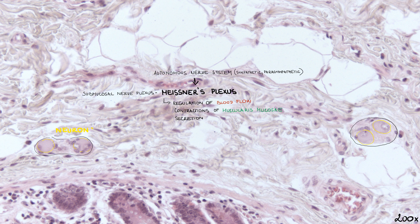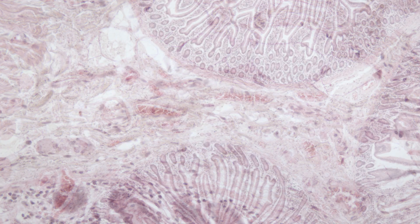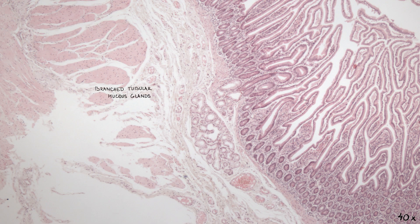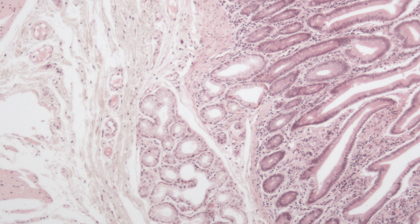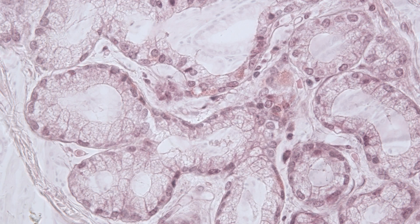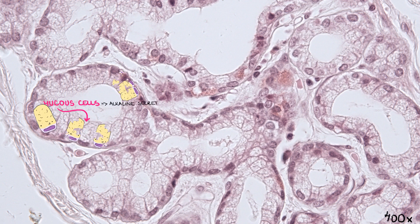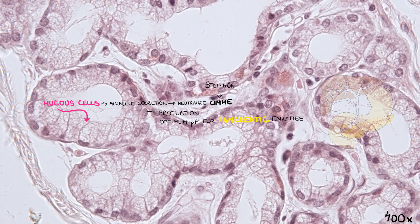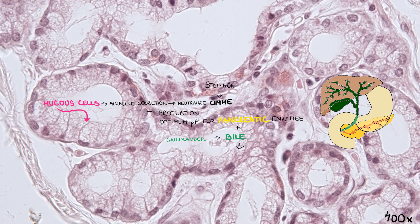We can see some neurons here, and also a plasma cell. The presence of branched tubular mucous glands — the duodenal or Brunner's glands — is what distinguishes the duodenum from other parts of the small intestine. These glands extend from the submucosa into the mucosa. Cells lining their epithelium are mucous cells which produce a distinctly alkaline secretion. This secretion neutralizes chyme from the stomach entering the duodenum, protecting the mucous membrane and bringing intestinal contents to the optimum pH for pancreatic enzyme action. Secretion from the pancreas, alongside bile from the gallbladder, enters the intestine via the pancreatic duct, which empties into the duodenum at the major duodenal papilla, also called the papilla of Vater.